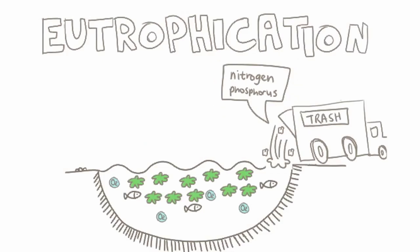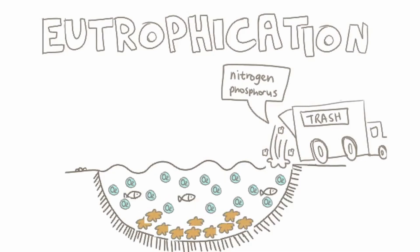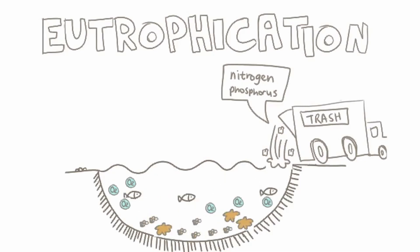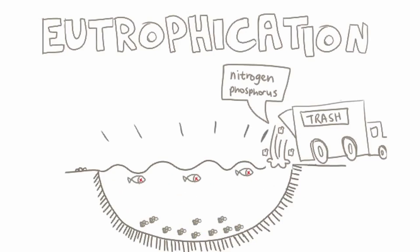Aren't plants good though? Don't they produce dissolved oxygen? Well, yes, but when they die, they sink to the bottom of the lake and decay there. And this decay uses up all the oxygen in the lake. With no oxygen to breathe, the fish and other animals die and the lake becomes unhealthy.